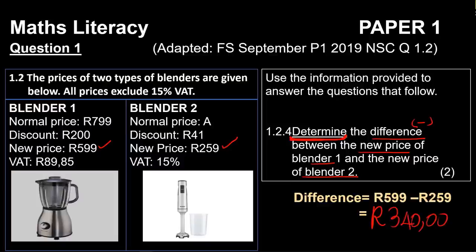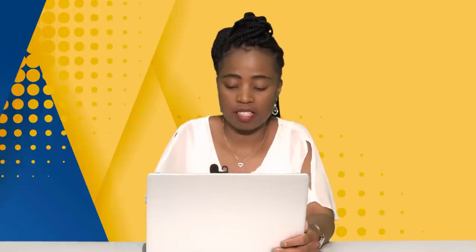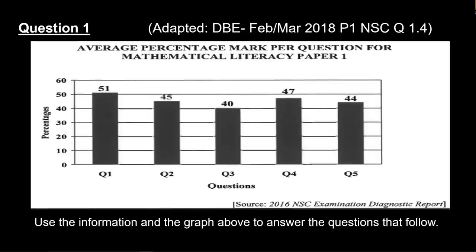Finance question level one is easy. Remember to go look at other question papers to get confidence in question one. Next question is data handling. It says 361,948 candidates wrote Mathematical Literacy Paper 1 in 2016. The paper had a total of 150 marks and candidates had three hours to complete it. The graph below shows the average percentage mark per question, showing question numbers one through five with percentages on top of each bar.